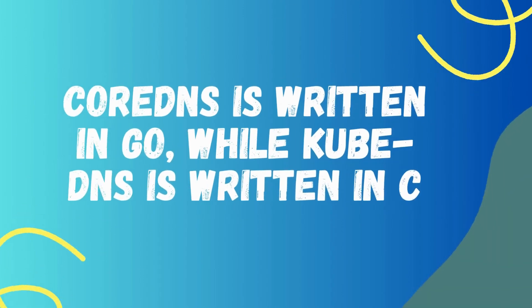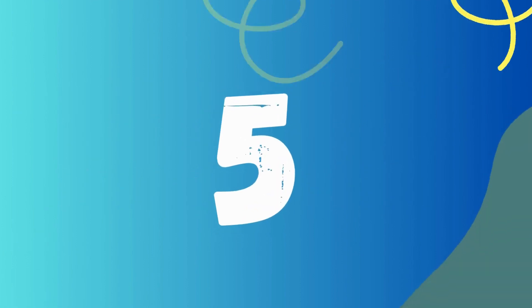Point number four is about the programming language each is written in. CoreDNS is written in Go while KubeDNS is written in C. CoreDNS is more portable and can run on a wider range of platforms. Go is a portable language that can run on a wide range of platforms, whereas C is less portable and can only run on a limited number of platforms.